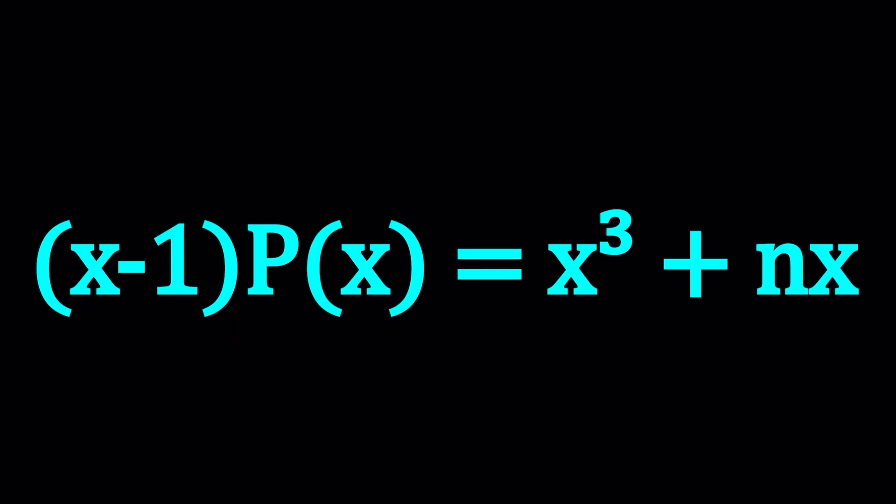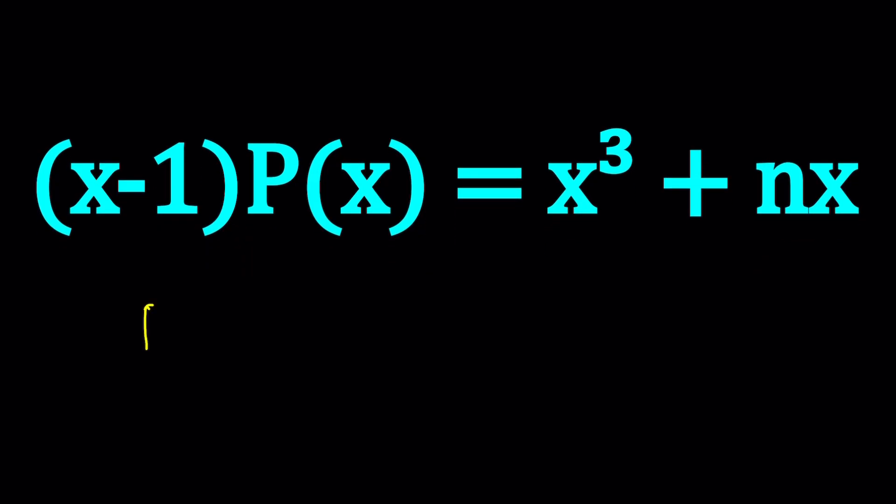Now, you might be thinking, isn't this too easy? Just divide both sides by x minus 1 and you're done. Okay, let's give it a try. I'm going to divide both sides by x minus 1, and that's going to give me x cubed plus nx divided by x minus 1. But the million dollar question is, this looks like a rational function to me. It's not a polynomial, is it?